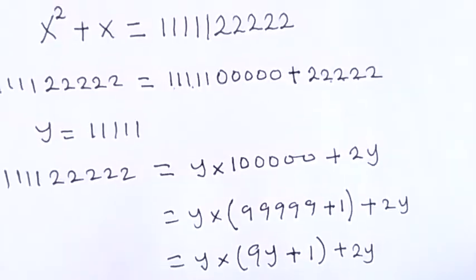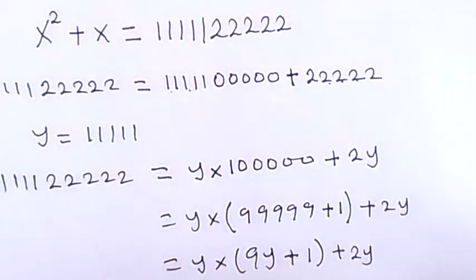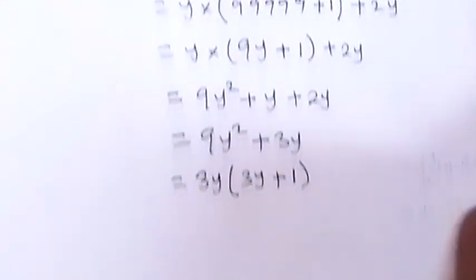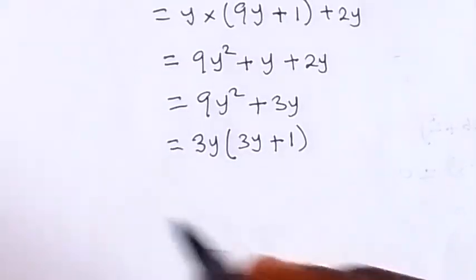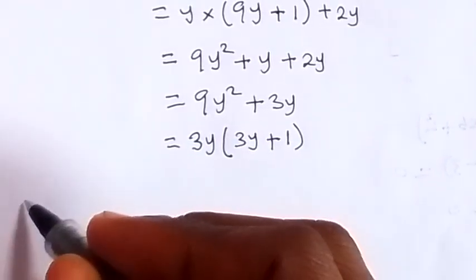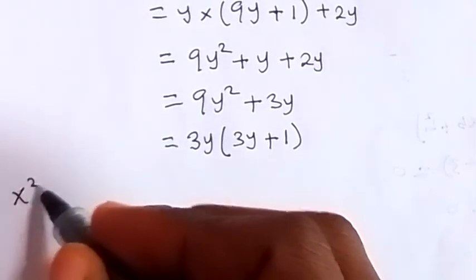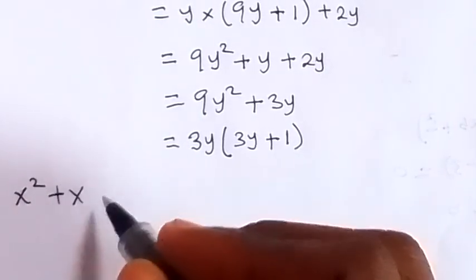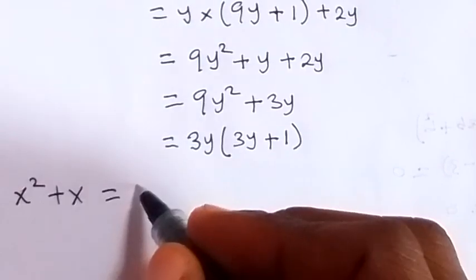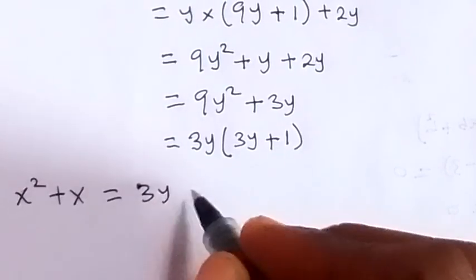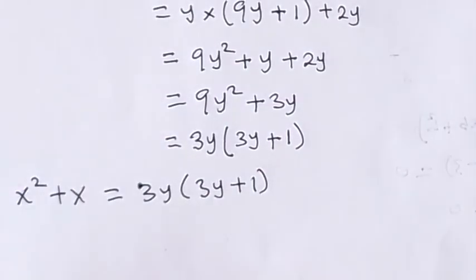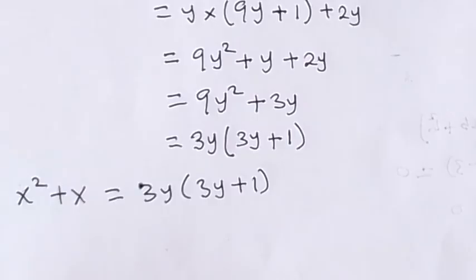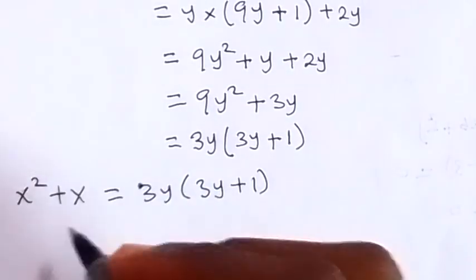So the right-hand side of the equation can be written in terms of y as 3y times the bracket 3y plus 1. The equation now becomes x squared plus x equals 3y times bracket 3y plus 1. Let's take everything to one side.